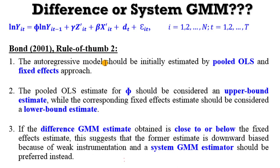And this is what he said: the autoregressive model should be initially estimated by pooled OLS and also by fixed effects approach. The pooled OLS estimates for the parameter of the lag dependent variable should be considered an upper bound estimate, while the corresponding fixed effects estimate should be considered a lower bound estimate. If the Difference GMM estimates obtained is close to or below the fixed effects estimate, this suggests that the Difference GMM estimate is also downward biased because of weak instrumentation. Therefore a System GMM estimator should be preferred.